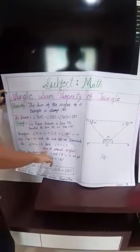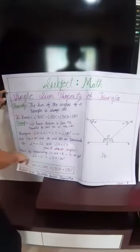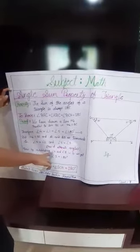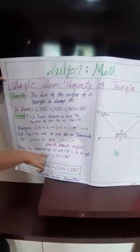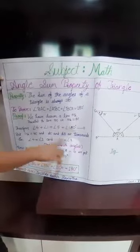This is called pair of alternate angles. Now by substituting angle 4 and angle 5 in equation 1 we get angle 2 plus angle 1 plus angle 3 equal to 180.